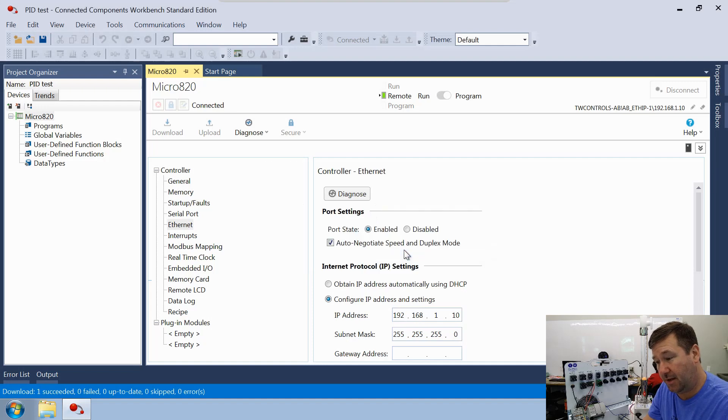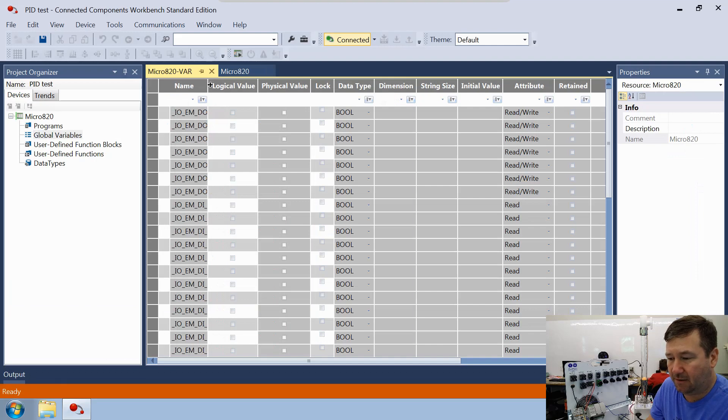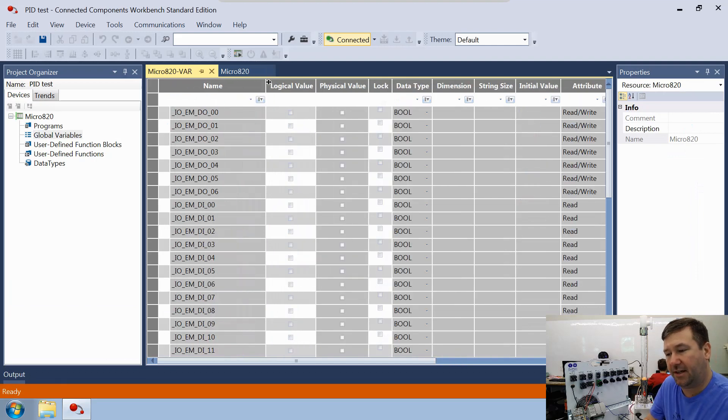Then don't forget to switch back to run mode and let's open up our global variables. And let's widen this column out that way we can see the descriptions, everything.